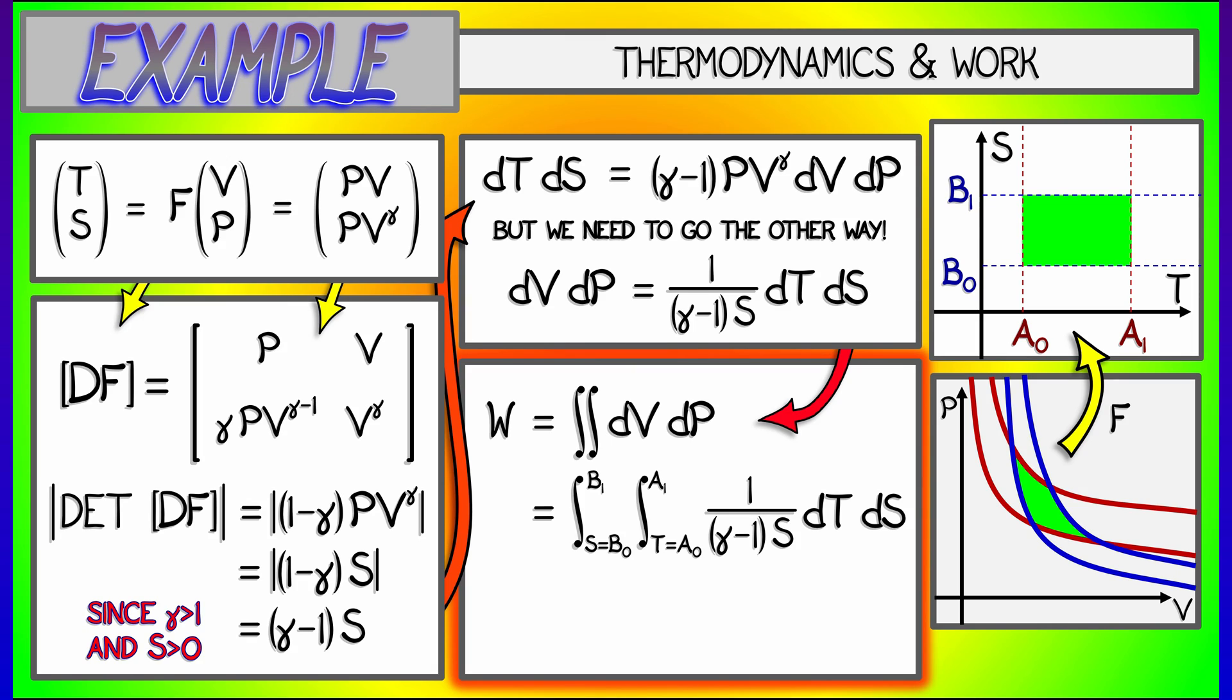As T goes from A0 to A1, S goes from B0 to B1. That integral is trivial. DT goes to T, and DS over S goes to log of S. When I substitute in for the limits of integration, I get a final answer that's really clean.